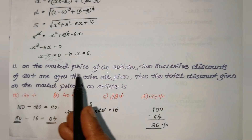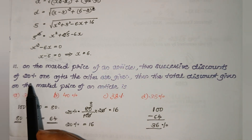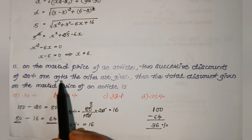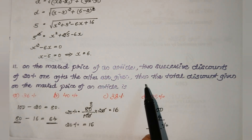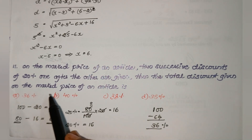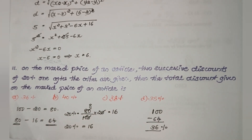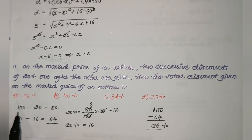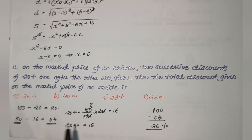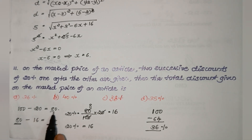On the market price of an article, two successive discounts of 20% are given. Then the total discount given on the market price of the article is? Let's assume the market price is 100. First time, 20% discount means 20 rupees off, so it becomes 80 rupees.